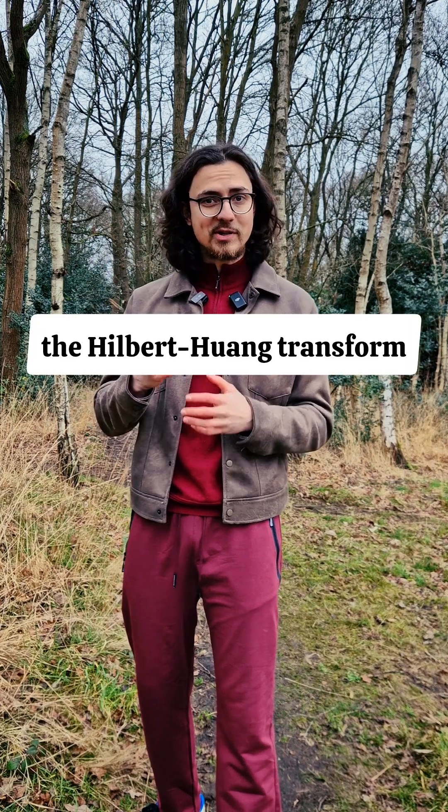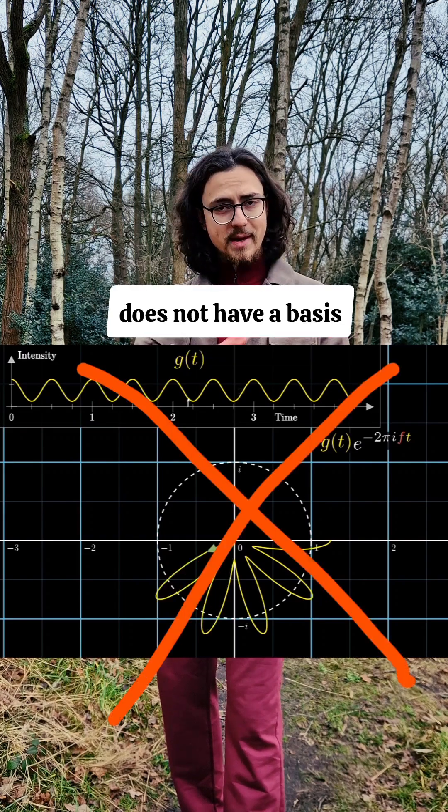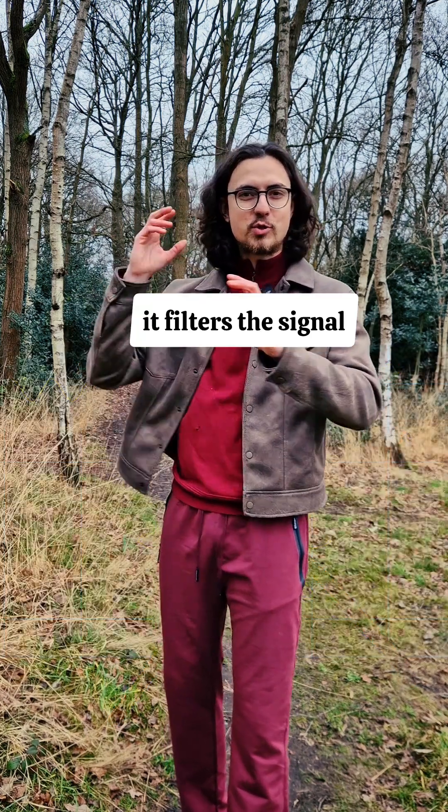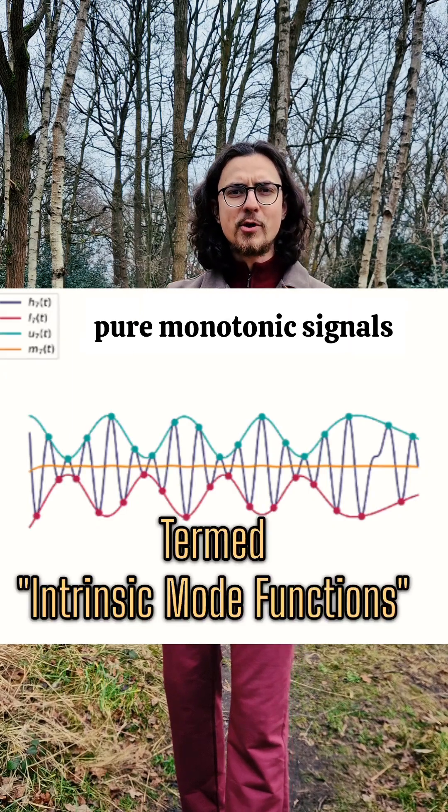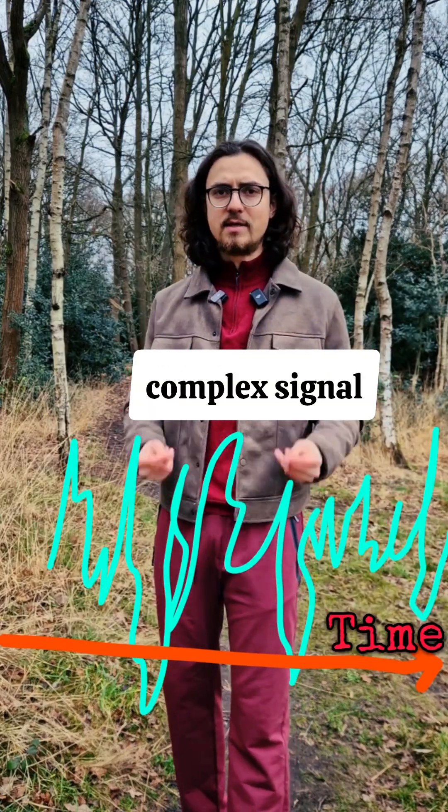Or the Hilbert-Huang transform. That last one does not have a basis for detecting the frequencies. It just tries to filter the signal to find a series of pure monotonic signals that make up a complex signal.